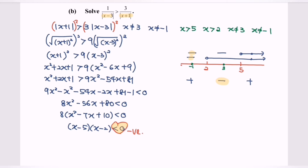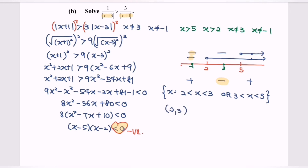So finally, the answer would be the set of values of x such that x is greater than 2 and less than 3, or x is greater than 3 and less than 5. That will be the solution set. In interval form, the answer would be the open interval (2, 3) union the open interval (3, 5), where 2, 3, and 5 are not included.